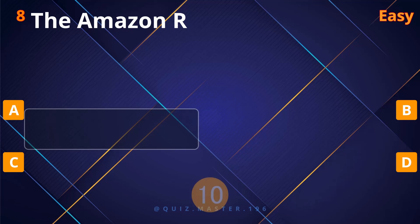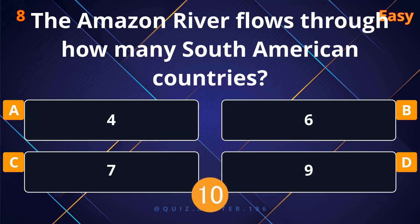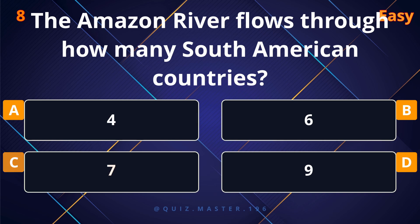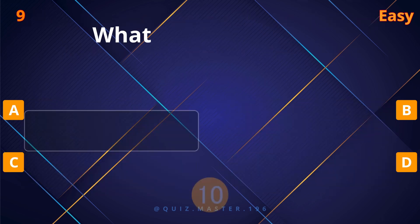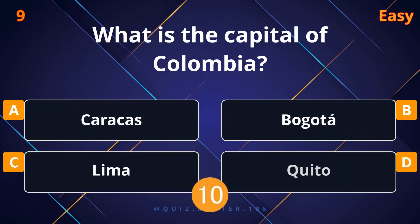Which country has the largest population in South America? Brazil. The Amazon River flows through how many South American countries? Seven.